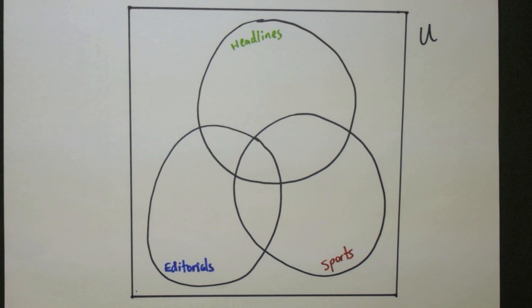We're going to take all the data and put it into this Venn diagram. Where the data is missing, we can fill it in using the Law of Inclusion and Exclusion.